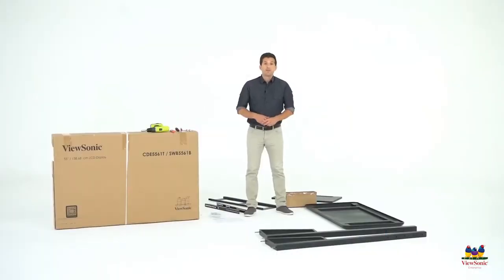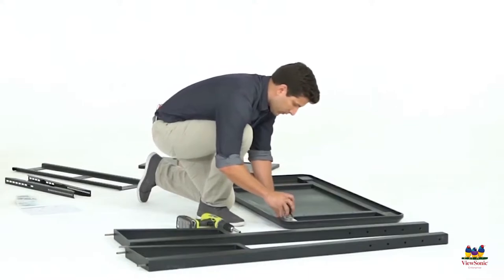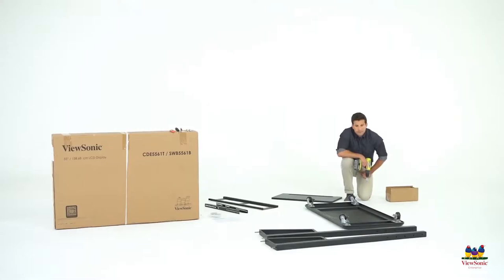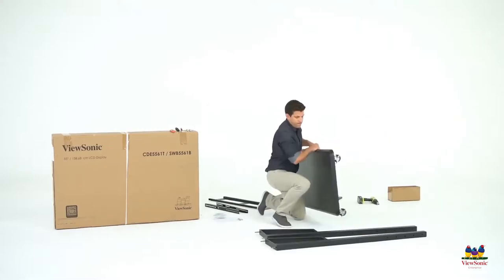We'll begin by building the rolling cart. Take out the base unit and place it face down on the floor. Then attach the wheels to each of the four corners of the base using four screws in each wheel. Once the four wheels are securely fastened, lift the base up on its side.